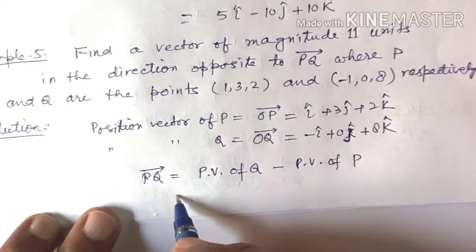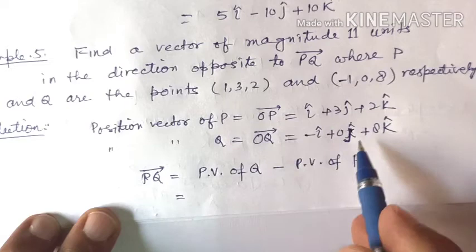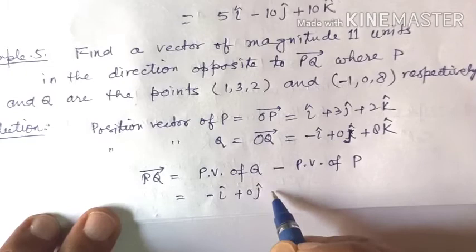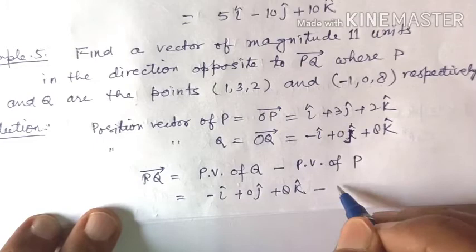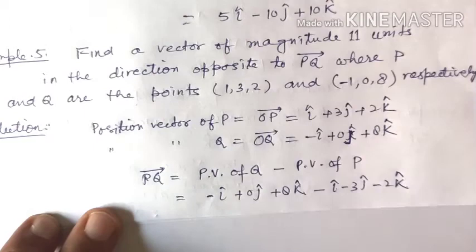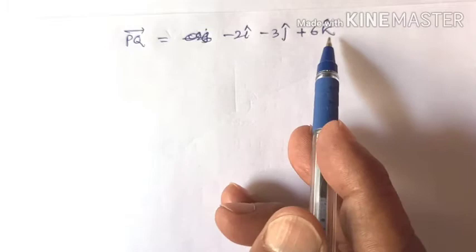PQ vector is calculated by subtracting OP from OQ: (minus i plus 0j plus 8k) minus (i plus 3j plus 2k), which gives minus 2i minus 3j plus 6k.